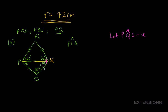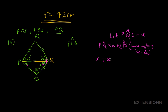Since the base angles of the isosceles triangle are equal, we can find X by using the sum of angles in a triangle: X plus X plus 109 degrees equals 180 degrees. Simplifying, we get 2X plus 109 degrees equals 180 degrees, so 2X equals 180 minus 109, which is 71 degrees.